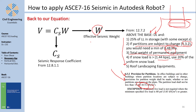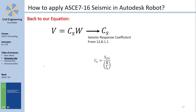Cs is the seismic response coefficient, based on section ASCE 12.8.1.1. It is calculated by equation 12.8-2: Cs = SDS / (R / IE), where SDS is the design spectral acceleration for short periods, R is the response modification factor, and IE is the importance factor.